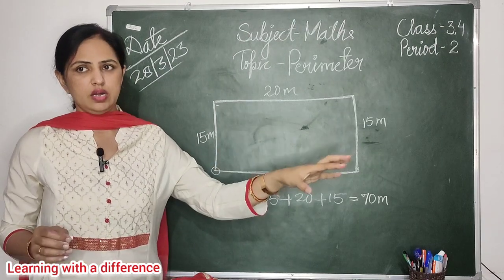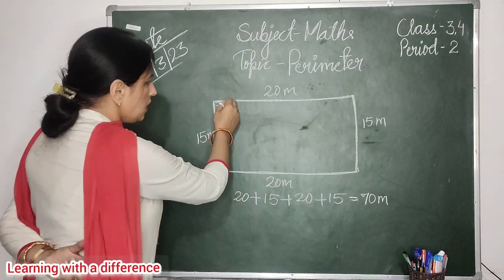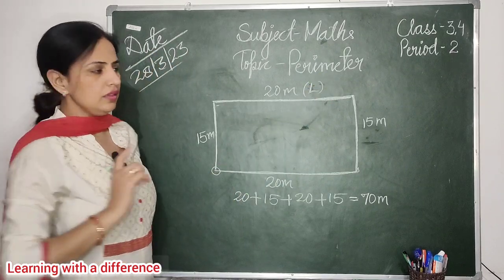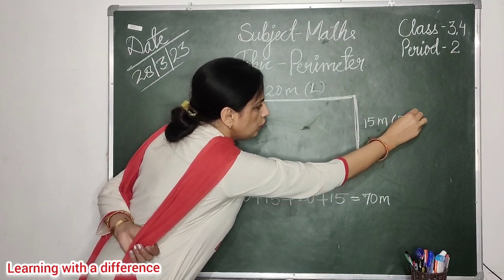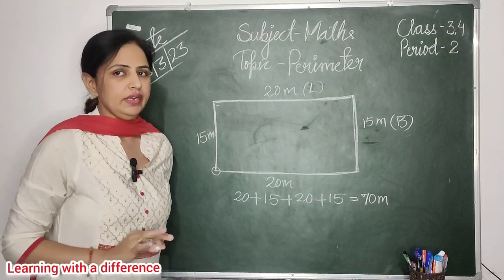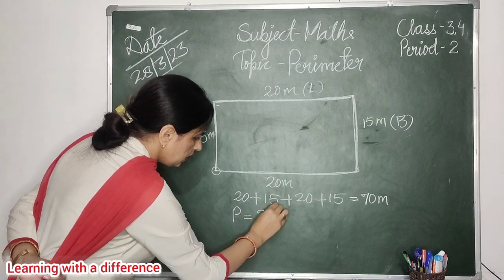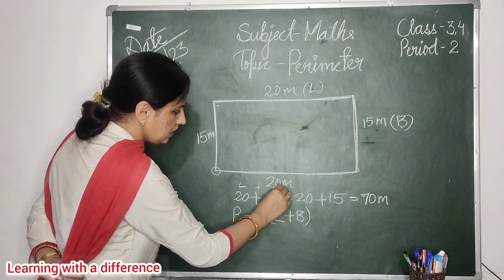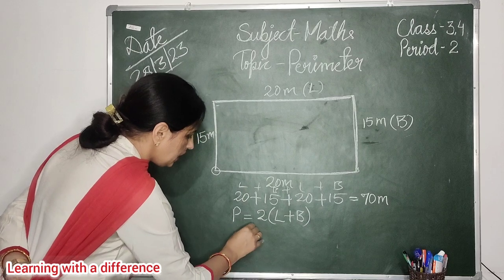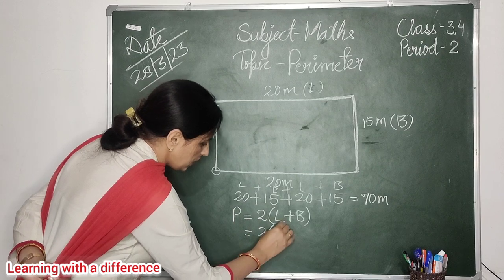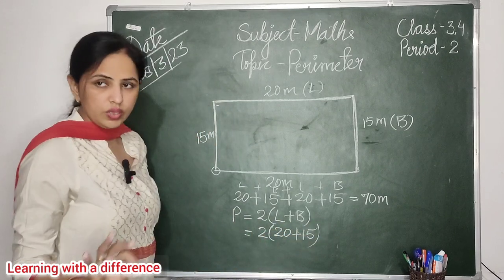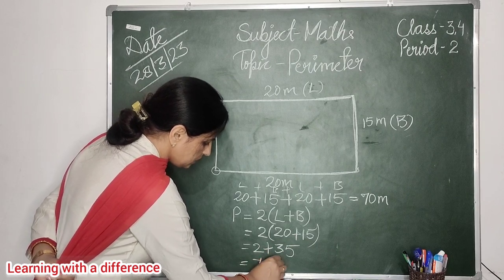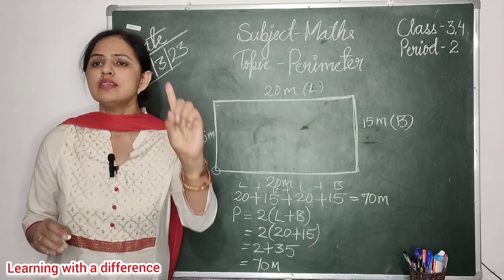एक और तरीका है — हम कैसे निकालेंगे? यह हमारी length होती है, और यह हमारी चौड़ाई — इसको हम बोलते हैं breadth। So we can find out perimeter using the formula: perimeter is equal to 2 times (length plus breadth). यहाँ पर length है 20 और breadth है 15। So 2 times (20 plus 15) — two times 35 — equals seventy meters। So total हमें wire की requirement है seventy meters।